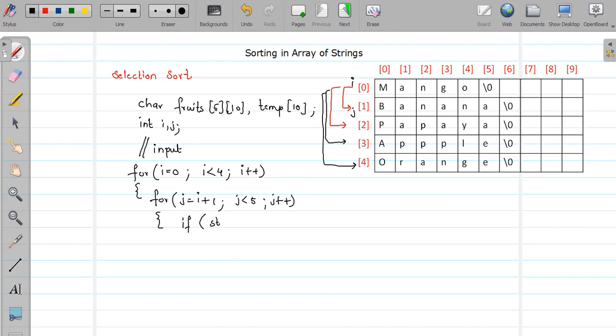Again I am going to perform case insensitive comparison because here case does not matter, so strcmpi. Fruits of i, so this will give me the address of i-th row, comma, fruits of j, address of j-th row.